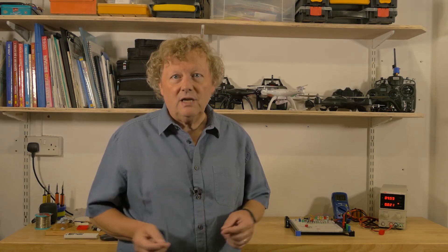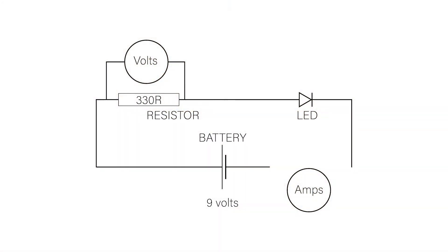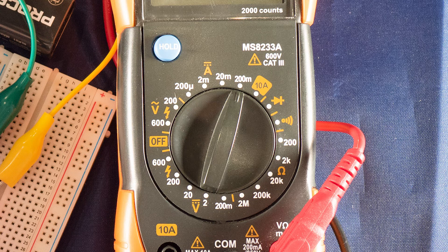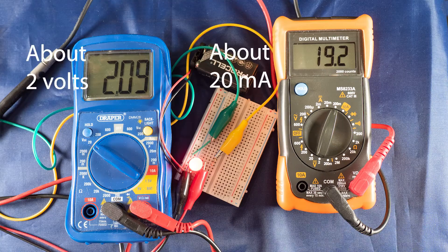I want to measure the current going through the LED rather than across it, so I need to interrupt the circuit, connect the ground lead of the multimeter to ground and the live lead to the LED. This meter is set to milliamps, and here with the real circuit we can see that once again we're in the right range.